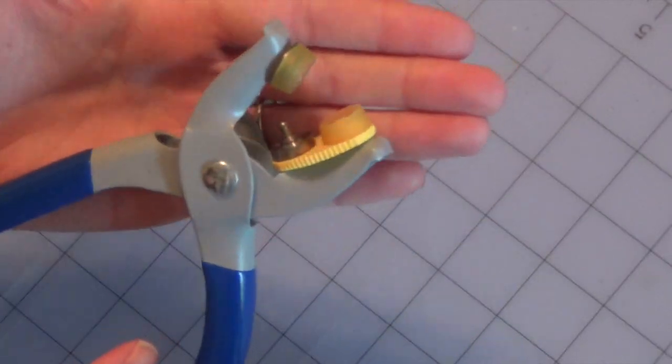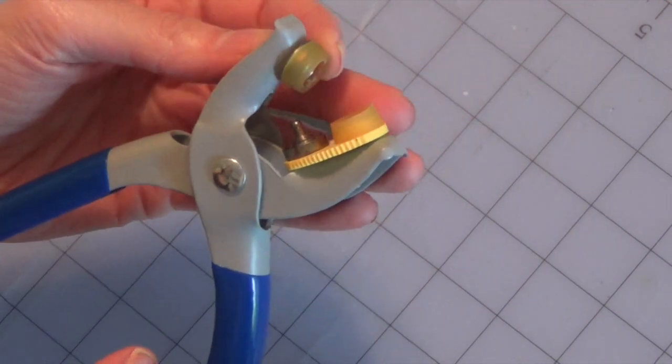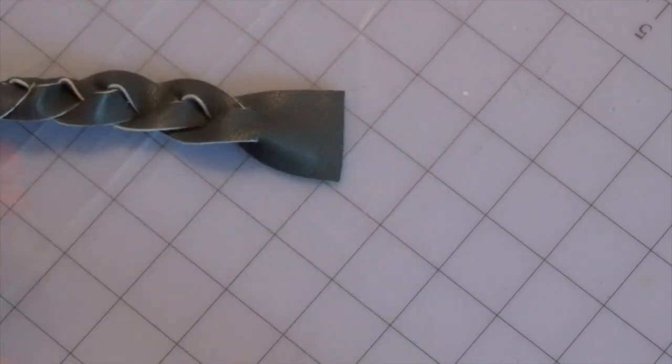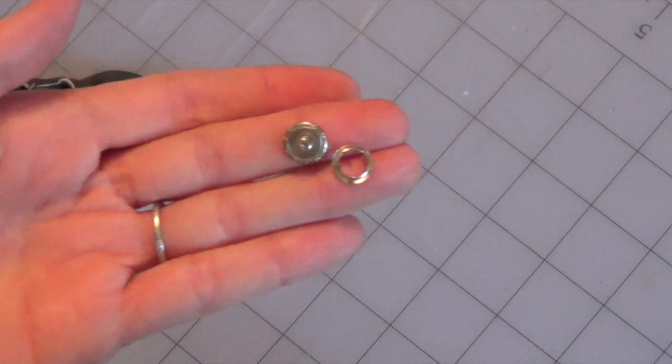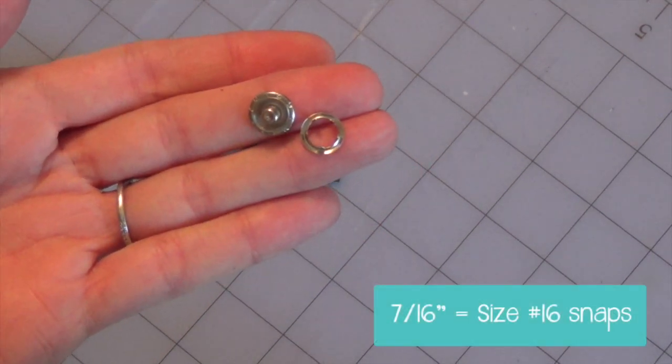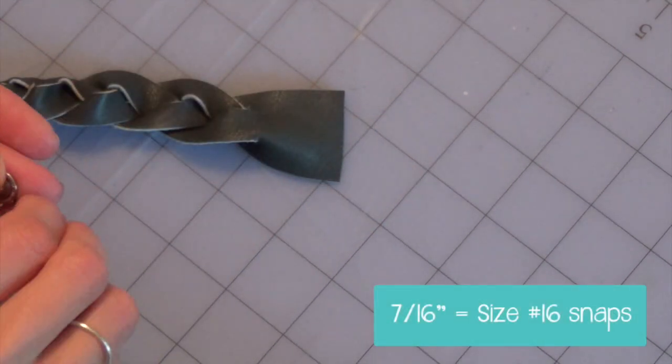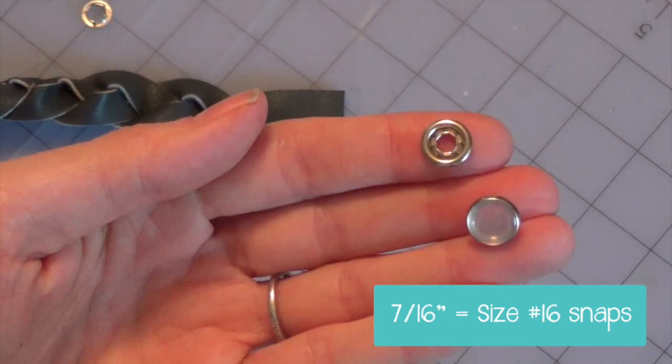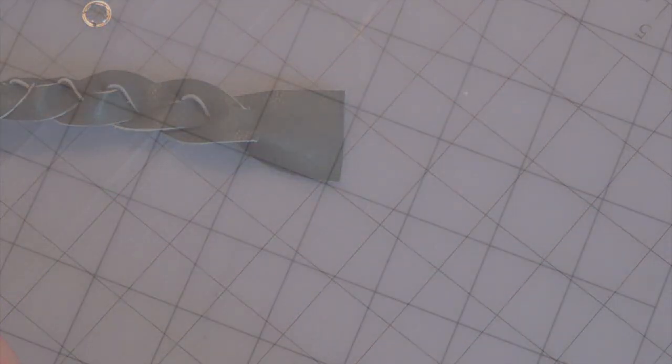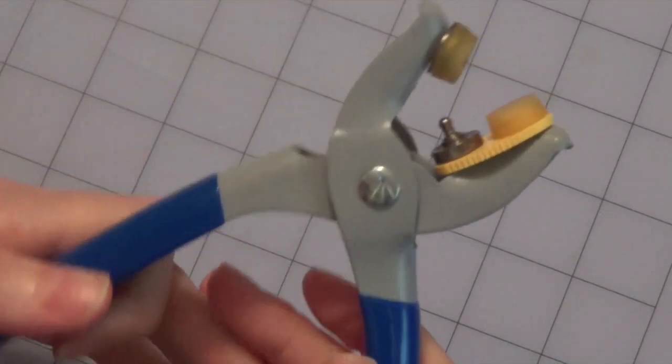These are the Dritz snap setting pliers. These are the kind that come with assorted adapter attachments so that you could set various size snaps with them. The snaps that I'm using are 7/16 inch, and they are the faux mother-of-pearl snaps. By the way, these snaps and this technique will also work on fabric and denim as well.